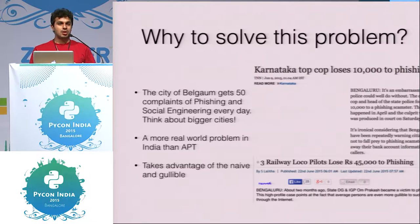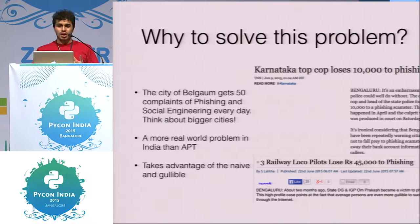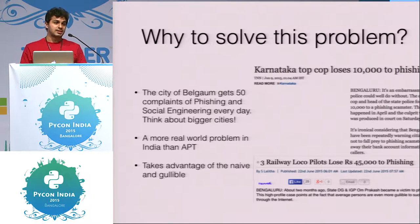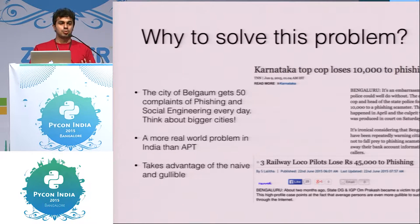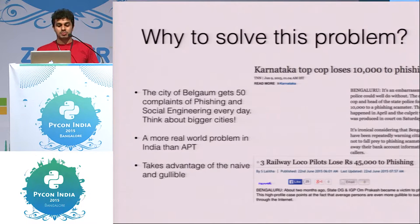Phishing is a problem that has not been solved as well as others. For viruses and malware, you have antiviruses; for APT-style threats, there are products you can buy. But there's not much to stop phishing for the common person. Phishing takes more advantage of the gullible rather than the tech-savvy. There is a majority of the population for whom this problem remains unsolved.